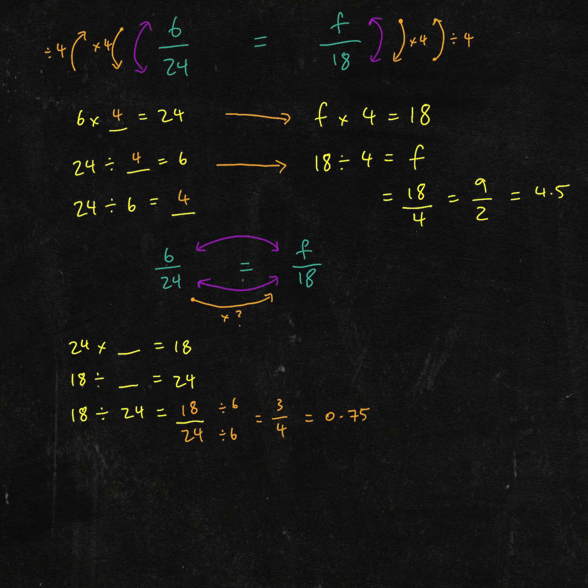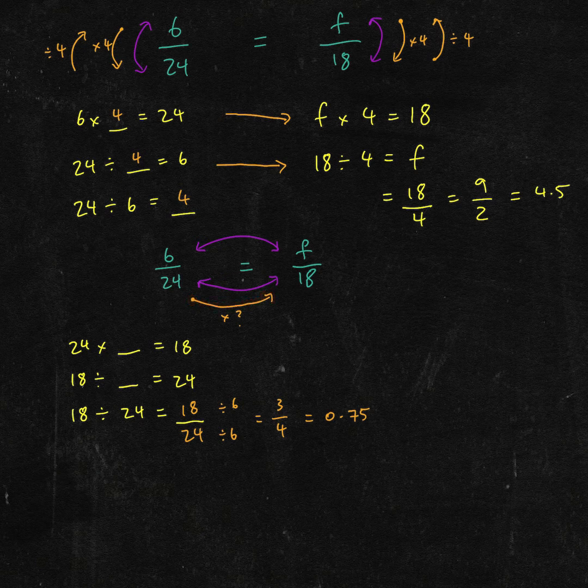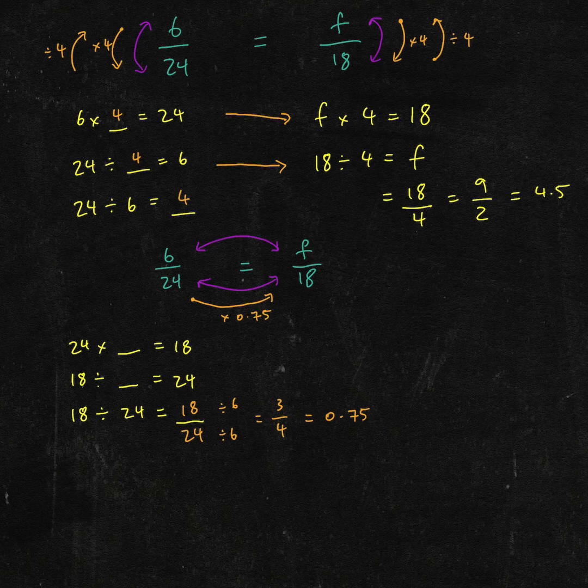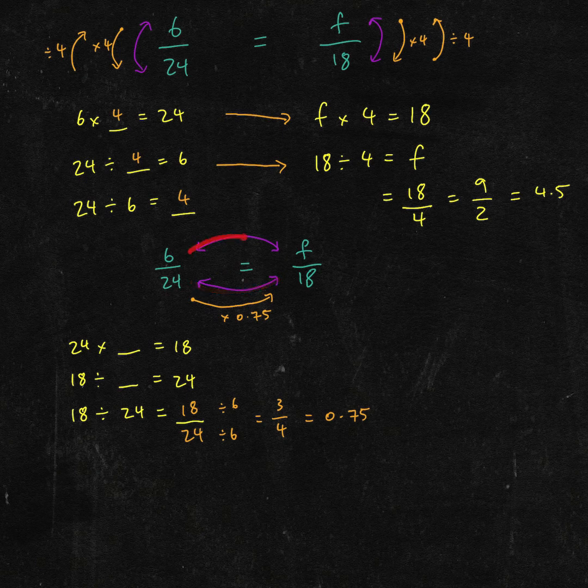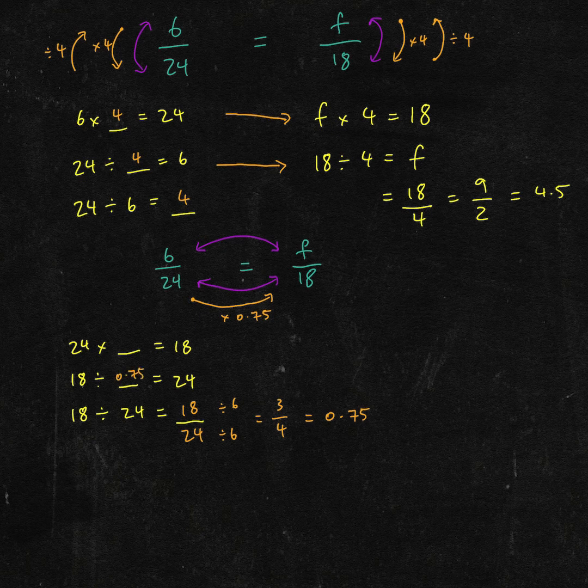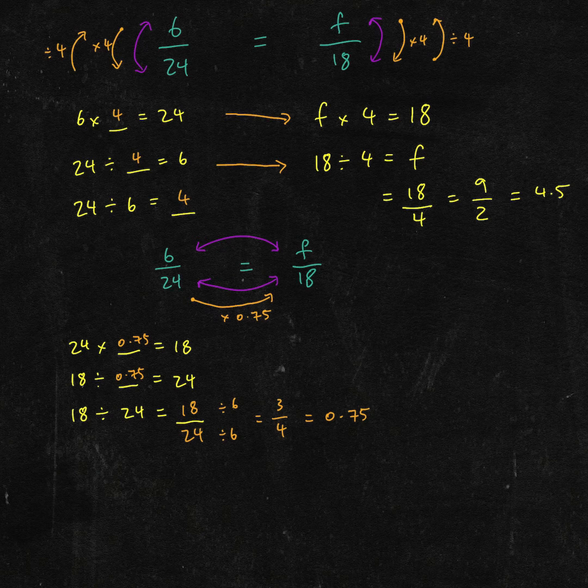So now we know that to get from here, from 24 to 18, we times by 0.75. And like we did before, what we do to one side, we need to do to the other as well. So I can write 0.75 in here and in here as well. So let's borrow this one, bring it over here.